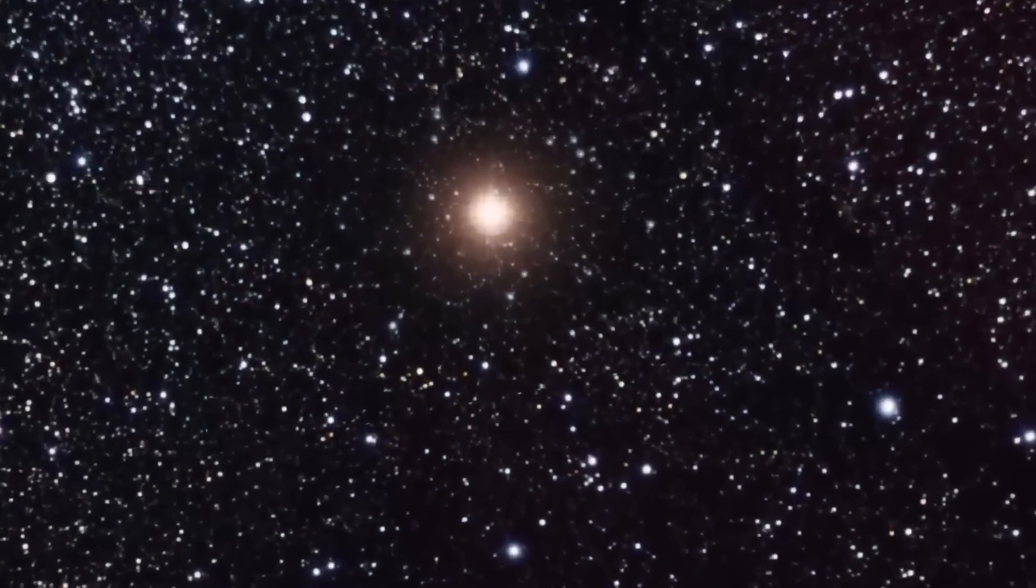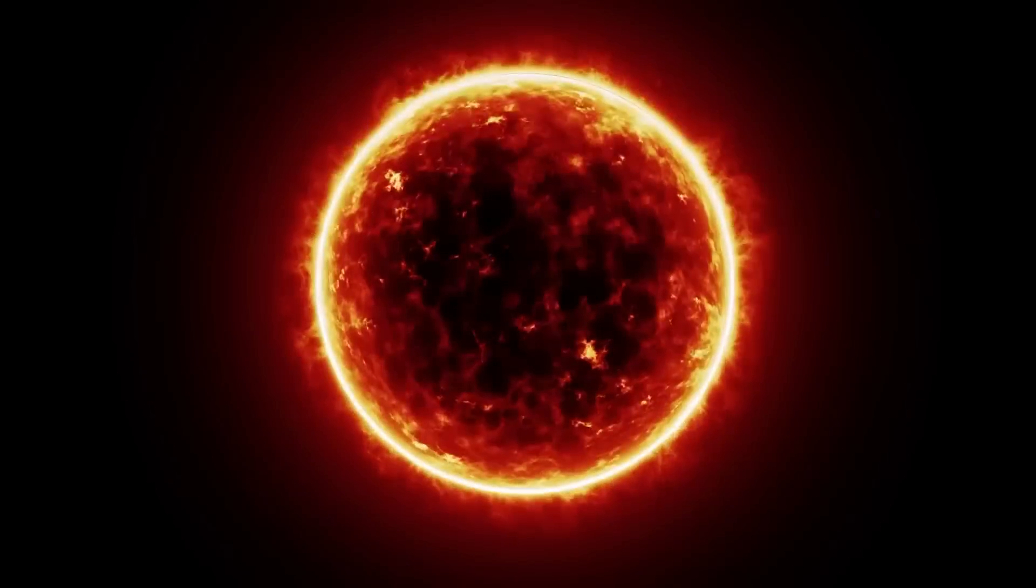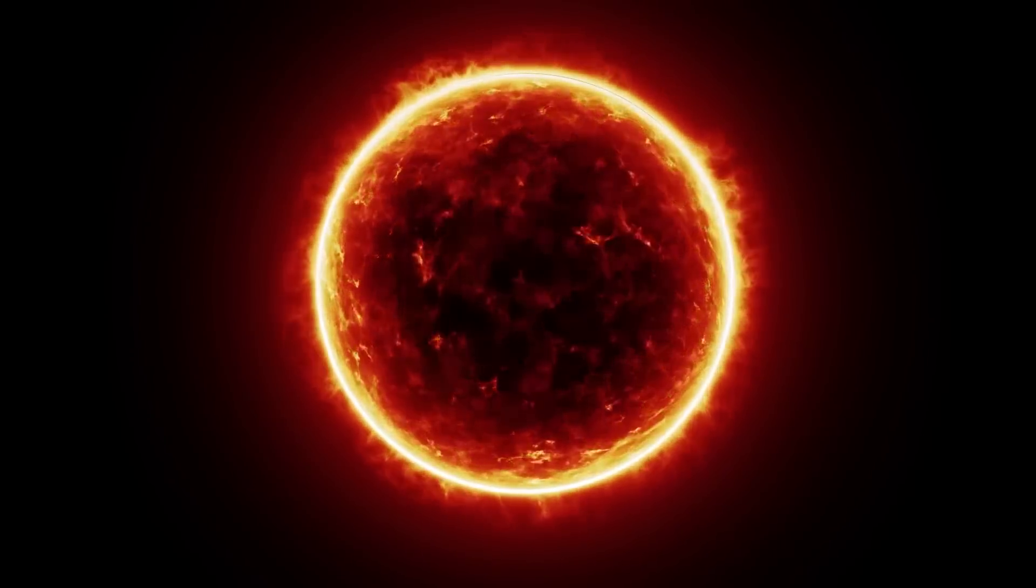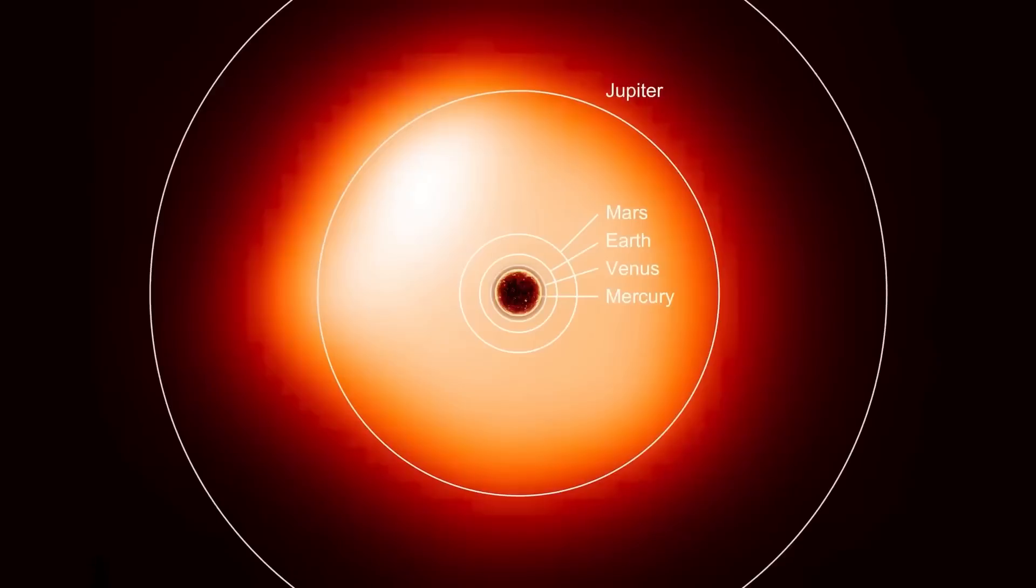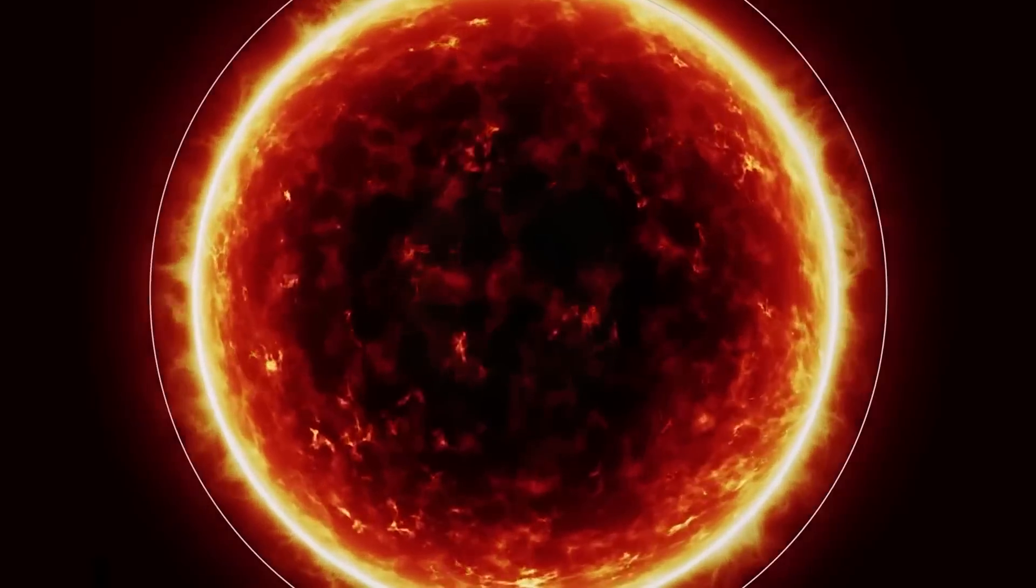But wait, there's more to Betelgeuse than just its flashy moves. This star is a true giant, with a diameter over a thousand times larger than our sun. It's so massive that if we placed it at the center of our solar system, it would swallow up all the inner planets, including our dear Earth, and stretch all the way to Jupiter.